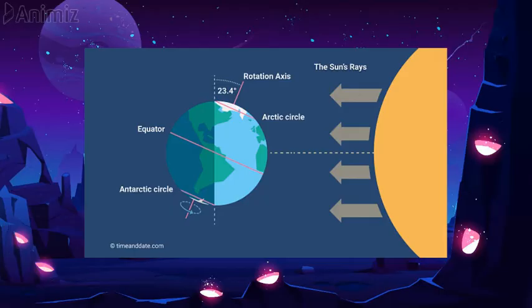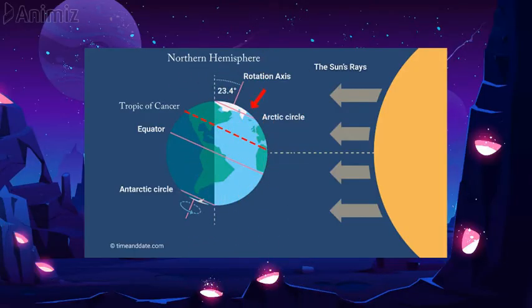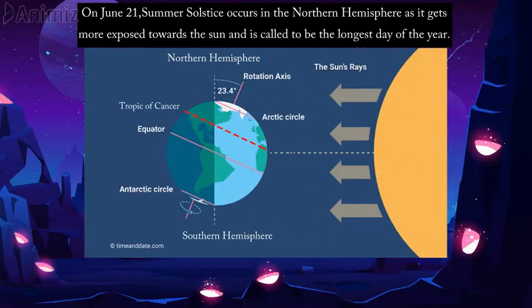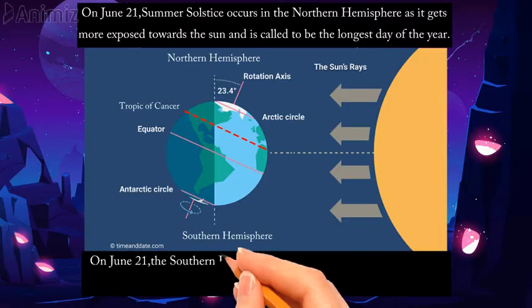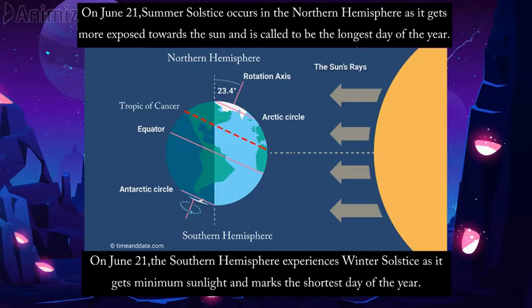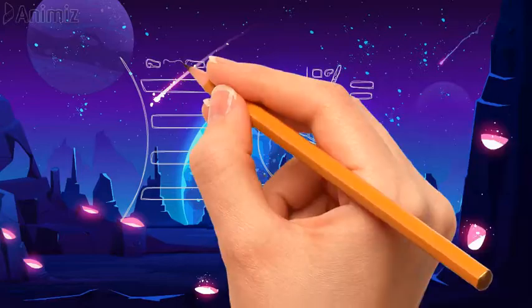Let's look closely at this position of the earth. Because of the earth's tilt, the sun is overhead on the Tropic of Cancer, which means the sun rays are falling directly on the Tropic of Cancer. Due to this, the northern hemisphere is receiving more sunlight as it is leaning more towards the sun, while the southern hemisphere is receiving less sunlight. So on June 21st, summer solstice occurs in the northern hemisphere — it is called the longest day of the year — while on the same day, the southern hemisphere experiences winter solstice, marking the shortest day of the year.